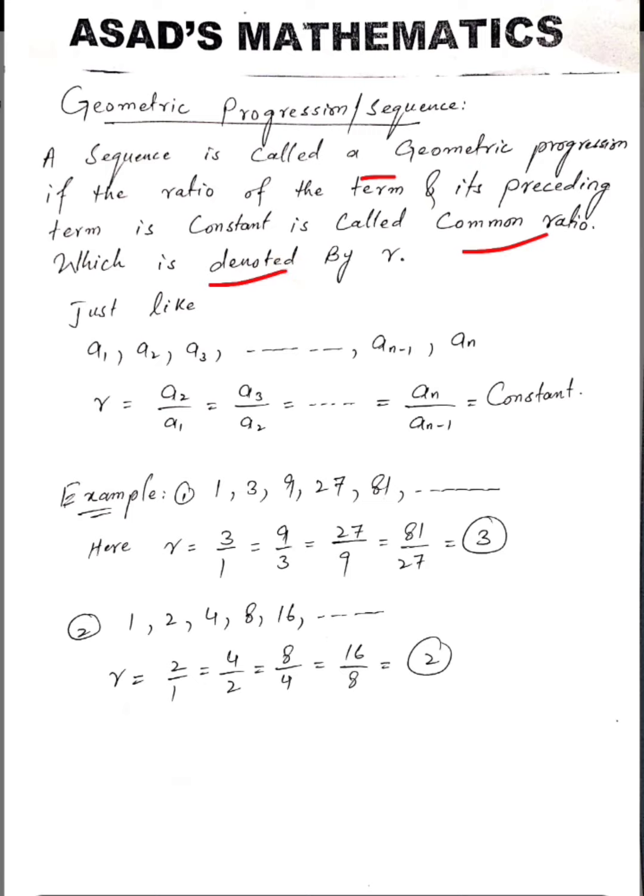Just like a₁, a₂, a₃, up to aₙ₋₁, aₙ. We find a₂/a₁, then a₃/a₂, and so on, up to aₙ/aₙ₋₁.